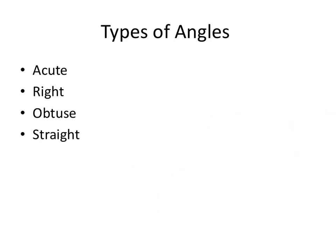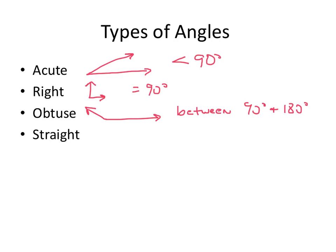So let's talk about the types of angles. We have acute angles. Acute angles are less than 90 degrees. Then we have right angles which are equal to 90 degrees. Obtuse angles are angles that are between 90 and 180 degrees. And then straight angles are equal to 180 degrees. And you probably already knew that.